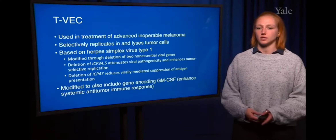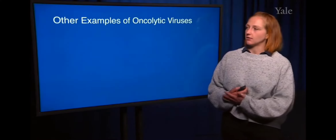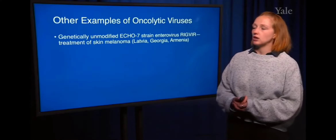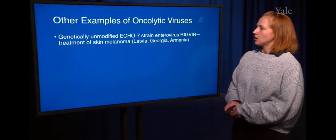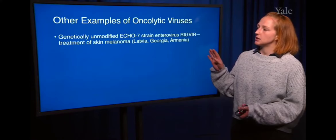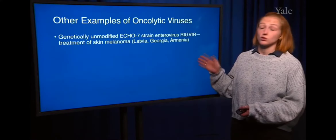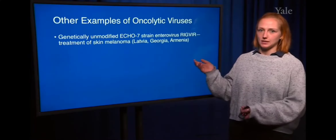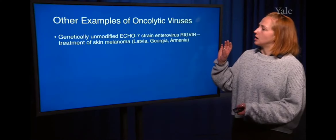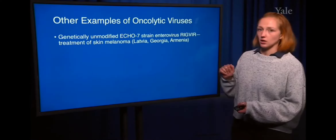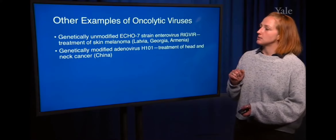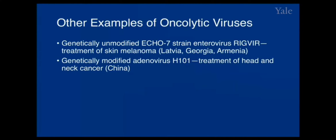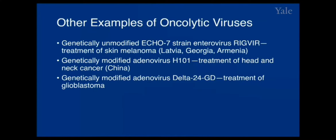Other examples of oncolytic viruses include the genetically non-modified ECHO-7 strain enterovirus Rigvir, used in Latvia, Georgia, and Armenia for the treatment of skin melanoma — an evolutionarily enhanced virus that specifically targets skin melanoma through directed evolution. We also have the genetically modified adenovirus H101 used in treatment of head and neck cancers in China, and the genetically modified adeno-delta-24GD virus, which is critical in the treatment of glioblastomas.